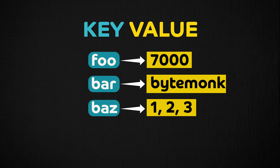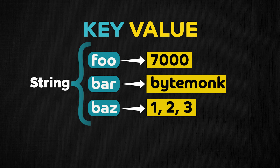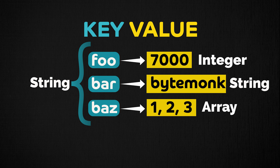A key value store is a database that allows you to store mappings from keys, which are typically strings, to arbitrary values. These values are typically also stored as strings, but some key value stores will also allow you to store integers or arrays as values. Key value stores can be considered as the most primary and simplest version of all databases — it just has one-way mapping from the key to the value to store data. The lack of any imposed structure makes them extremely flexible.